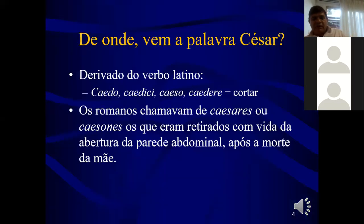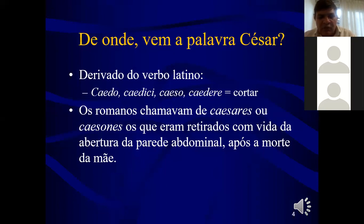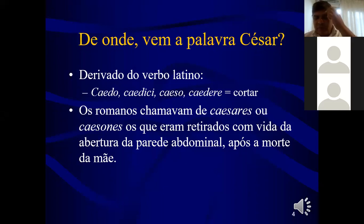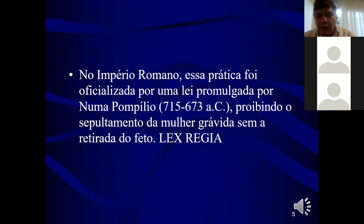E de onde vem a palavra cesárea? É derivada do latim, com o mesmo significado de caedo, caedis, caeso, caedere, que é igual a cortar. Isso é o que significa cesárea. Os romanos chamavam de caesares ou caesones os que eram retirados com vida da abertura do ventre após a morte da mãe. Na época do Império Romano, a cesariana era permitida somente após a morte materna.